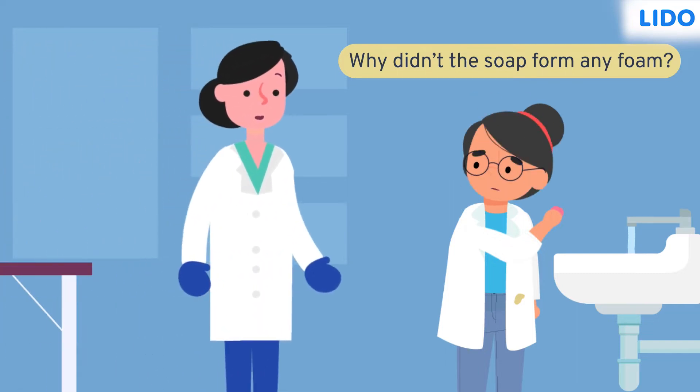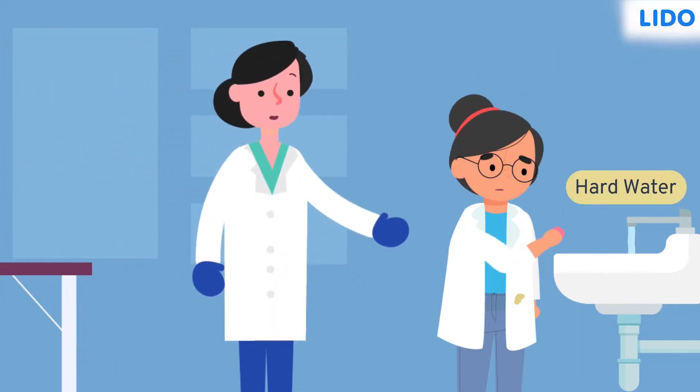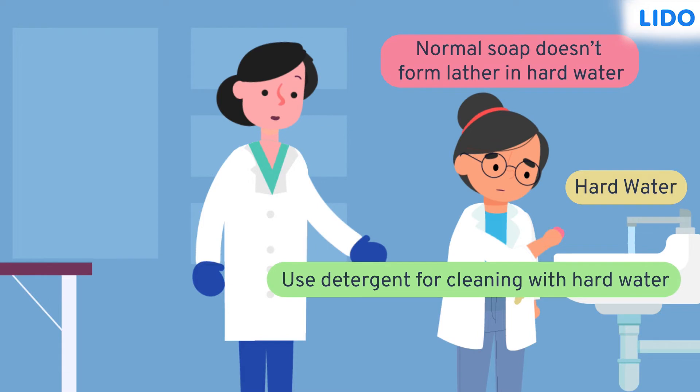That was when her chemistry teacher explained, the water coming from the tap is hard water and it does not form lather with normal soap. One must use detergent for cleaning with hard water. But how does detergent work to remove the stain?